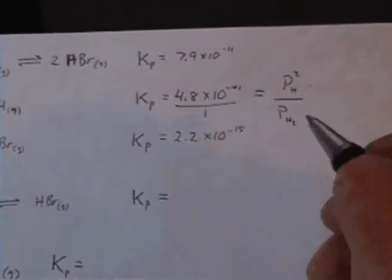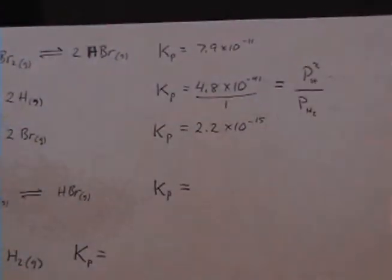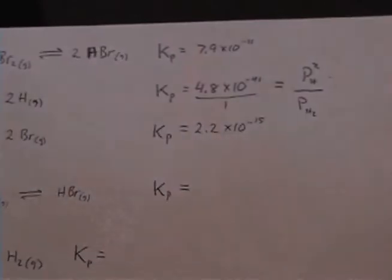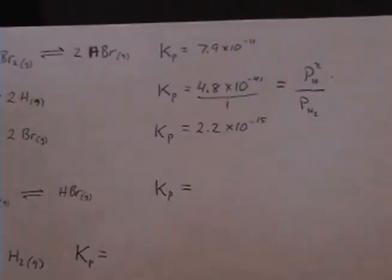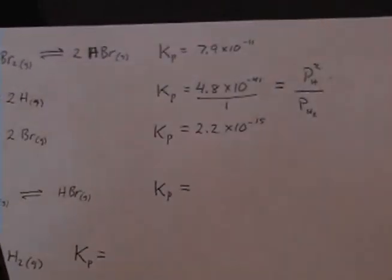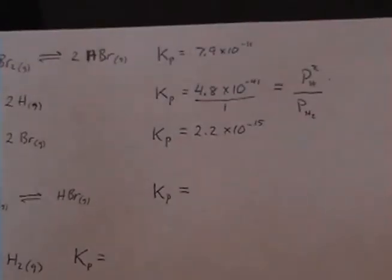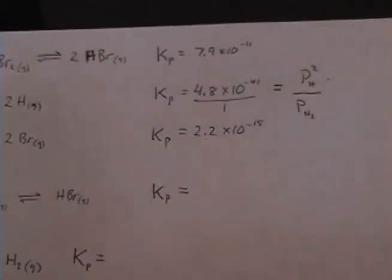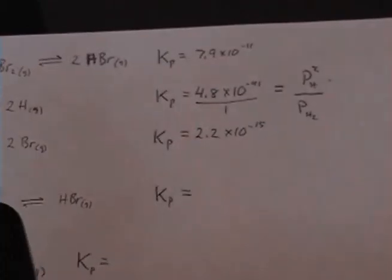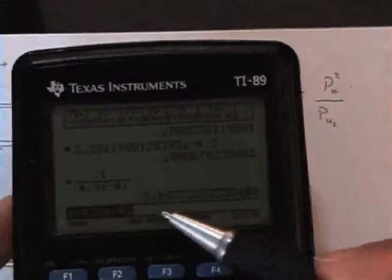And you know you can think of this like over one, and so this value is going to be 1 divided by 4.8 times 10 to the minus 41. Okay, and so what we end up with is 2.08 times 10 to the 40th.